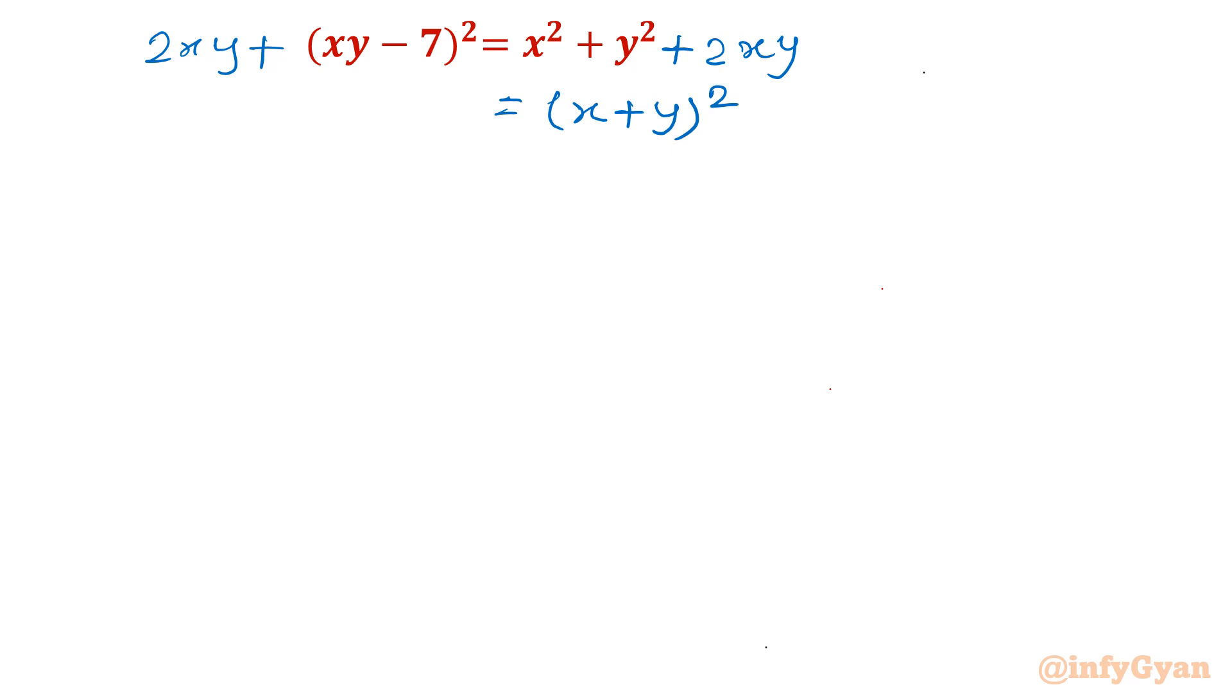For the LHS, I will write 2xy as is, and expand this a minus b whole square. So a square plus b square minus 2ab, which is minus 14xy. So 2xy minus 14xy gives us x square y square minus 12xy plus 49 equal to x plus y whole square.